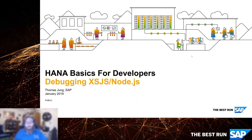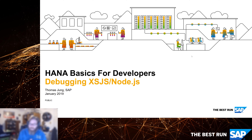Welcome back to HANA Basics for Developers. We're going to continue our journey looking at XSJS and let's look at some of the tooling around it, specifically the debugger. I'm only going to show you the debugger once in the context of XSJS, but really because XSJS is just a Node.js module, the same things we're going to see here apply to debugging pure Node.js modules. You can just refer back to this — the process and tooling is the same.